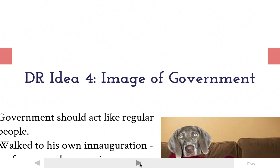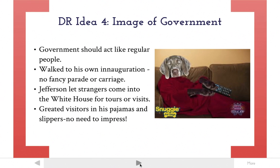Democratic-Republican idea four is the image of government, and this one's kind of silly, but it's actually really important. Jefferson believed that the government should act like regular people — just because you're the president doesn't mean you're special or that you get to wear fancy clothes or act fancy. Jefferson lived this motto of being a regular person and really tried hard to portray the image of being a regular guy, even though he was quite wealthy and was president. He walked to his own inauguration twice — no fancy parade, no carriage. He simply walked down the street, strode up to the podium, gave a speech, and walked home.